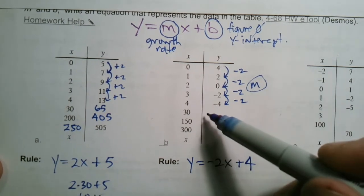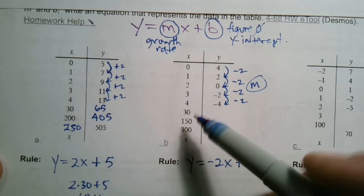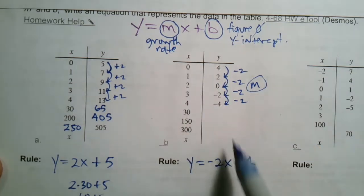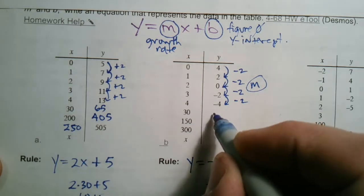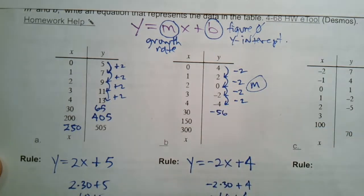So once I have my rule, once again, I've just got to fill in my blanks here. I know x is 30, so I plug in a 30. So I'm going to say negative 2 times 30 plus 4. So negative 2 times 30 is negative 60. Then negative 60 plus 4 is negative 56. So that's what goes here, negative 56.